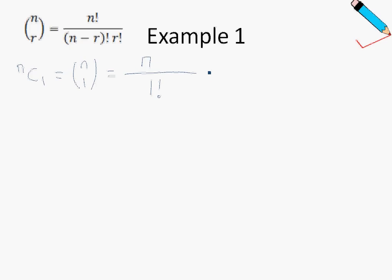And this can actually be simplified to just give you n, because 1 factorial is just 1.